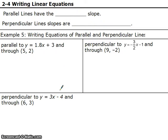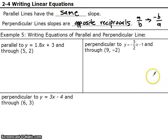Last thing we need to be able to do is parallel perpendicular lines. Parallel lines have the same slope. Perpendicular line slopes are opposite reciprocals. Opposite means you change the sign. Reciprocal means you flip it over. So if I have a slope of a over b, the opposite reciprocal of that slope would be negative b over a. Change the sign. Flip it over.